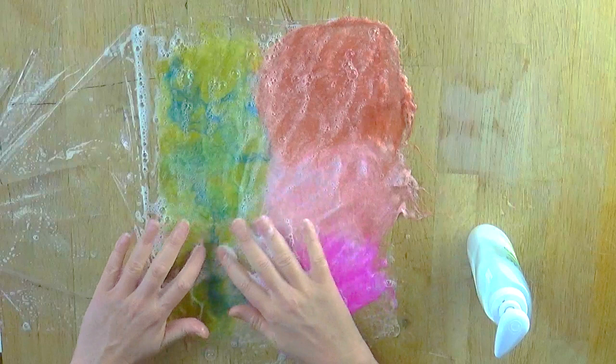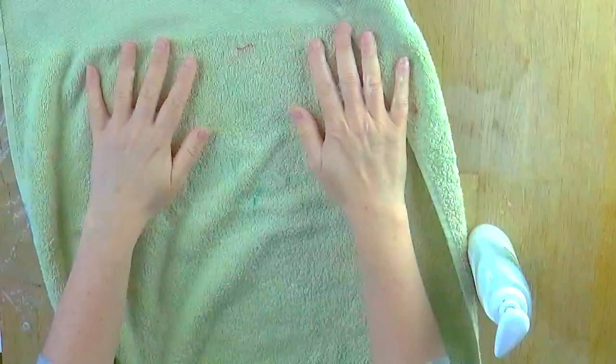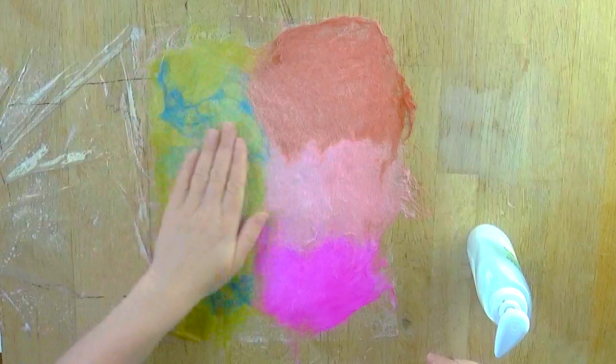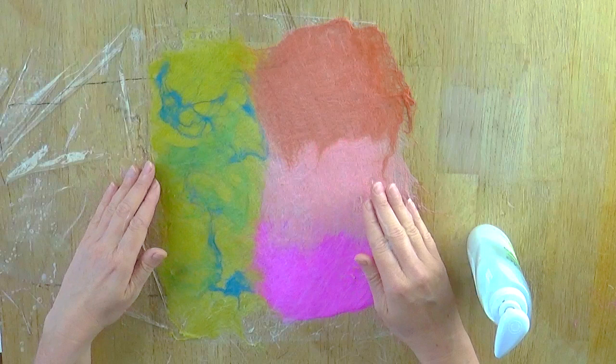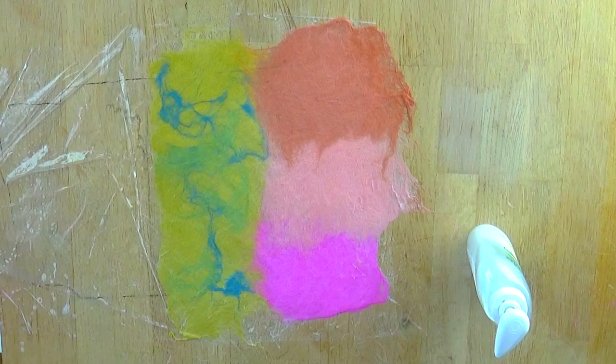If it starts to get too soapy, just give it a little blot. After you've been rubbing like this for four or five minutes on one side and four or five minutes on the other side, now is the time to blot it all over.